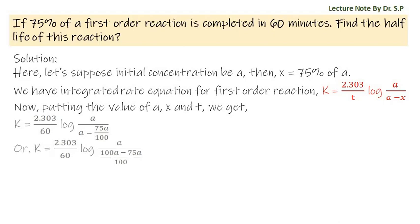Or, K is equal to 2.303 by 60 times log A by 100A minus 75A by 100. Or, K is equal to 2.303 by 60 times log 100A by 25A. Or, K is equal to 2.303 by 60 times log 4.